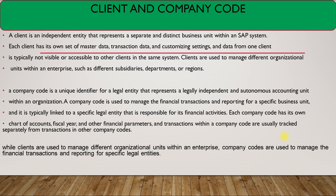Company code is a legal entity where you do all financial transactions and reporting specific to a business unit. If you need to do audits or financial transactions, all that financial activity is handled inside the company code. The chart of accounts, fiscal year, and financial parameters like controlling — all of those things are related to the company code. To summarize: clients are used to manage different organizational units within the enterprise, while company codes are used to manage financial transactions and reporting for specific legal entities.